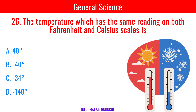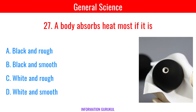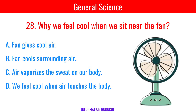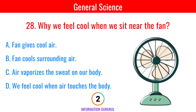The temperature which has the same reading on both Fahrenheit and Celsius scales is minus 40 degrees. A body absorbs heat most if it is black and rough. Why do we feel cool when we sit near a fan? Air vaporizes the sweat on our body.